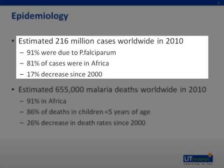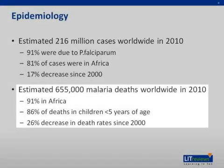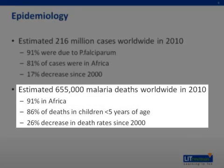Malaria is also a major cause of death worldwide, leading to an estimated 655,000 deaths in 2010. Again, the vast majority of these were in Africa. Sadly, almost 90% of these deaths occurred in children under the age of 5. On a more positive note, the number of deaths from malaria have also decreased significantly since the year 2000.